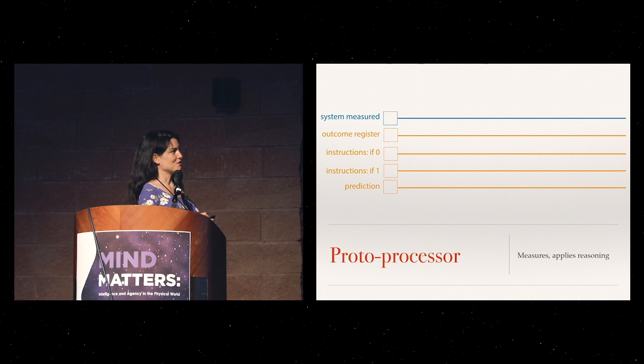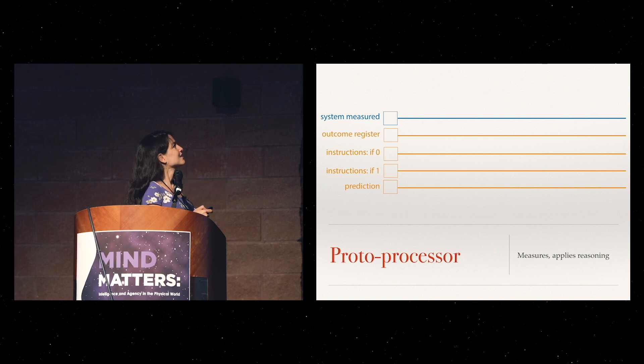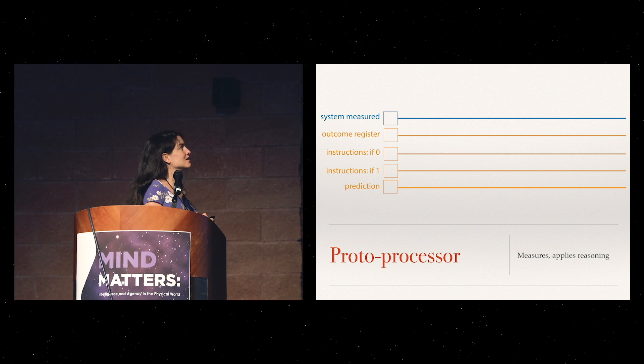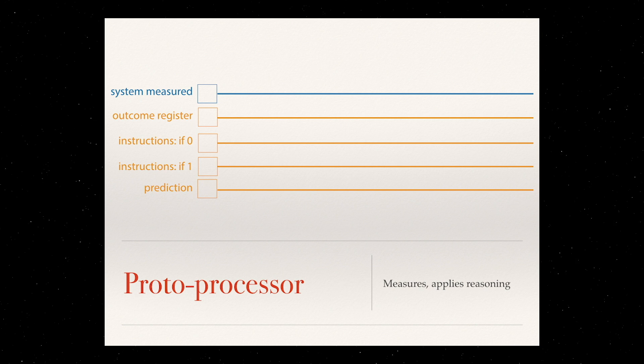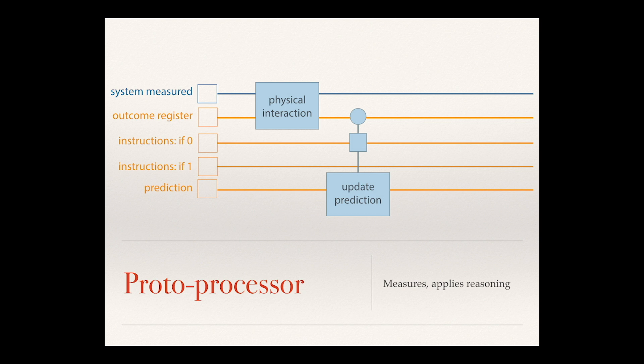It needs a few registers. So time will go from left to right. The first register is where it will save the outcome of this measurement. Then it will have some instructions of what to do if it measures zero and we'll give a prediction here, and some instructions of what to do if it measures one. First we'll have some kind of physical interaction between the agent and the system measured that will produce this outcome register. Then there will be some interaction, well, this is like a non-CNOT, like a Toffoli gate with X's on both sides.